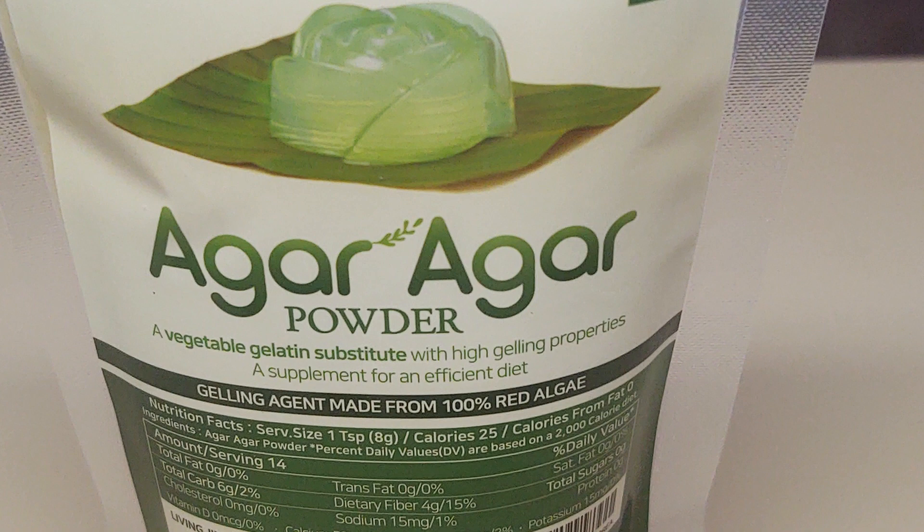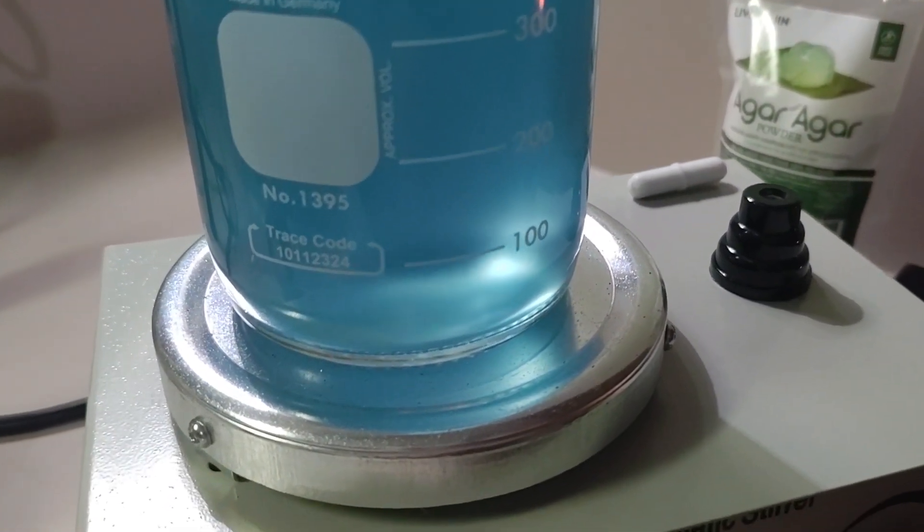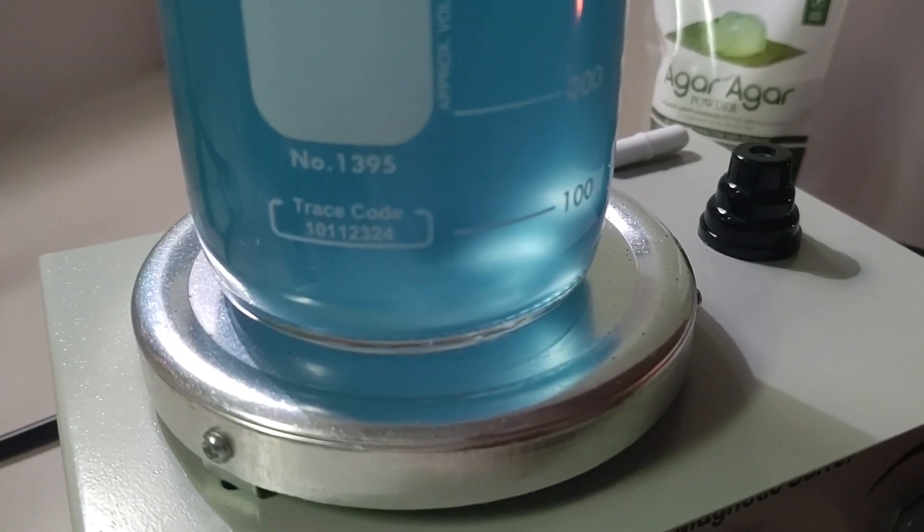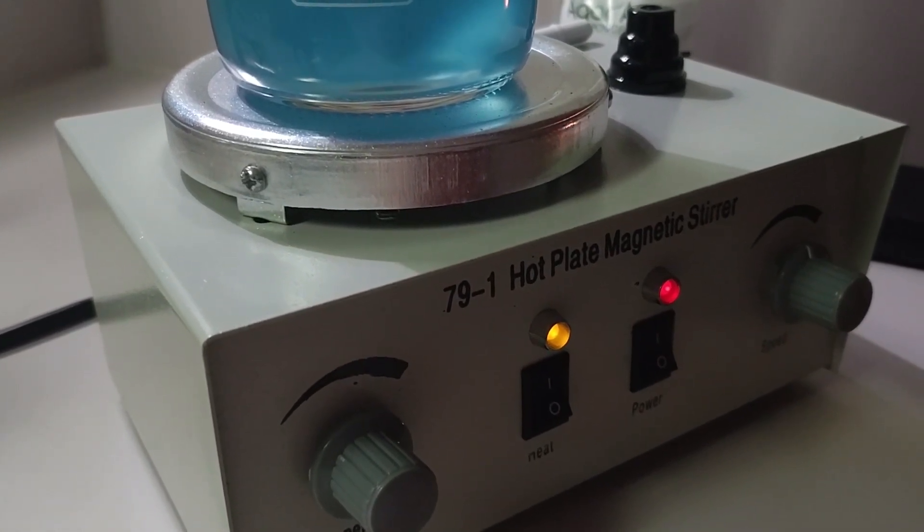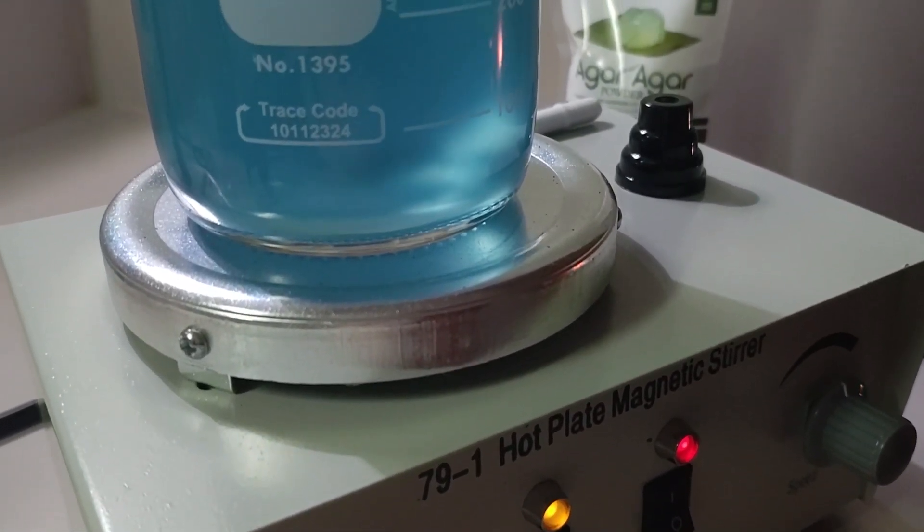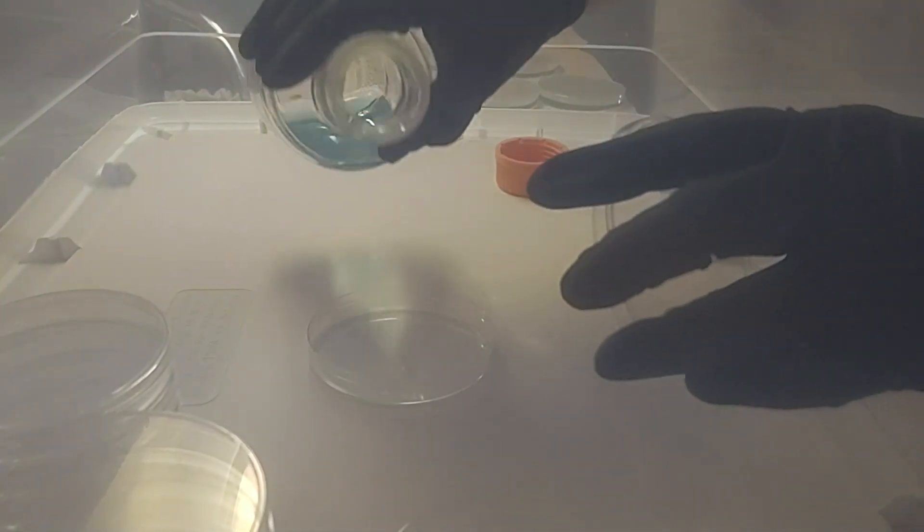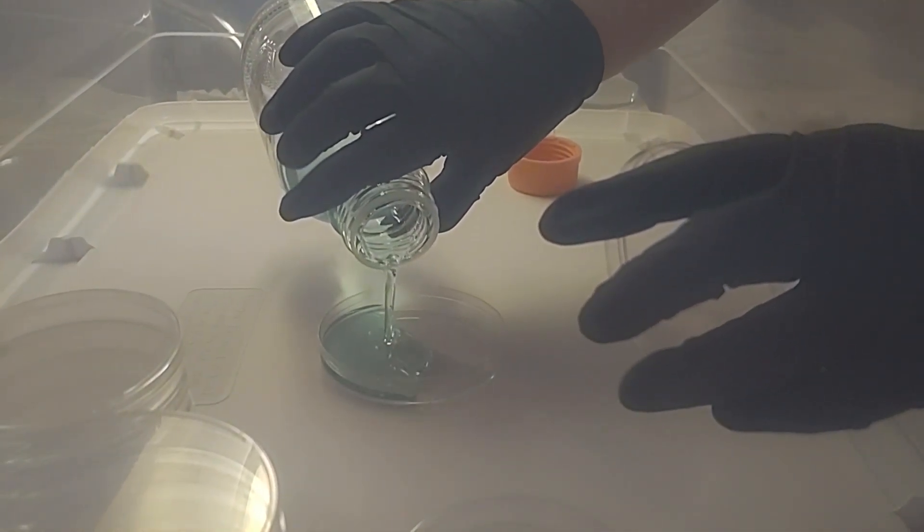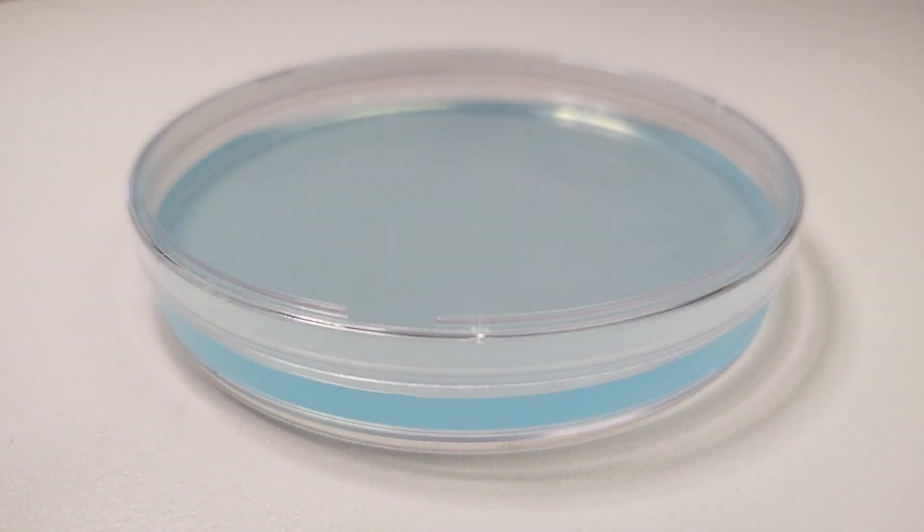Our recipe uses 10 grams of agar for 500 milliliters of boiling purified water or you can use 5 grams of agar for 250 milliliters of water. Using 90 millimeter petri dishes we pour 24 plates with 500 milliliters and we pour 12 plates with 250 milliliters. The size of your plate and how full you fill your plates will determine how many dishes you will create.